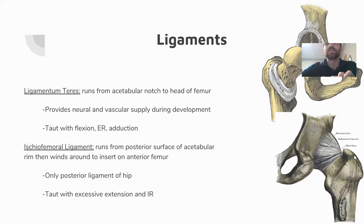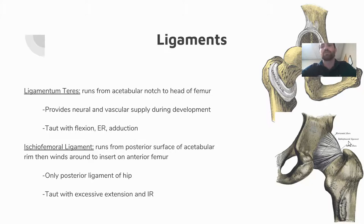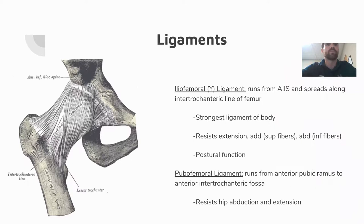The ischiofemoral ligament is taut with excessive extension and internal rotation. Looking at the alignment of its fibers posteriorly, extending the hip tightens it, as does internal rotation — that's how to remember which motions it contributes to for stability. Next is the iliofemoral ligament — the ligament that compensates for the lack of anterior stability in the hip joint structure.